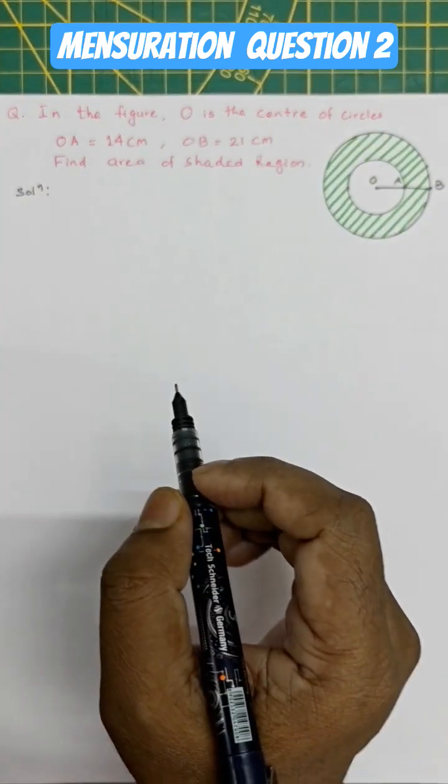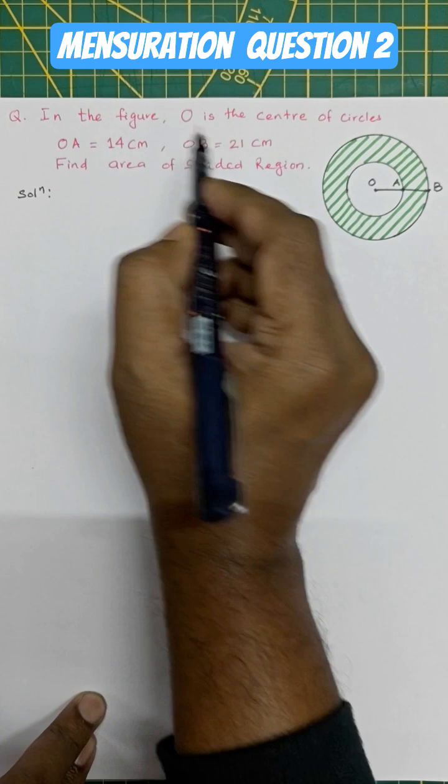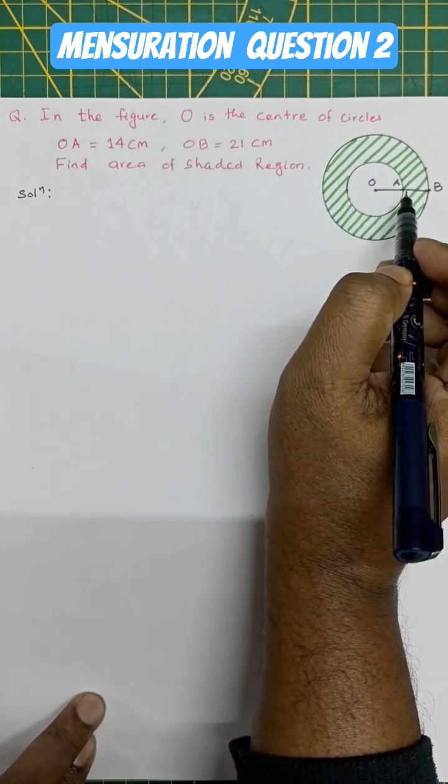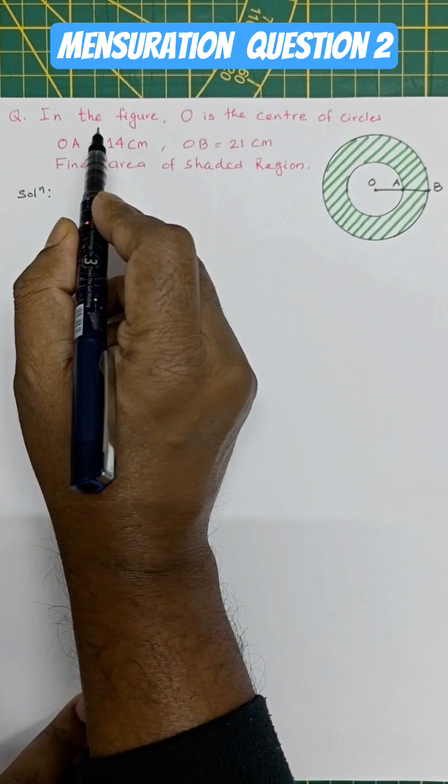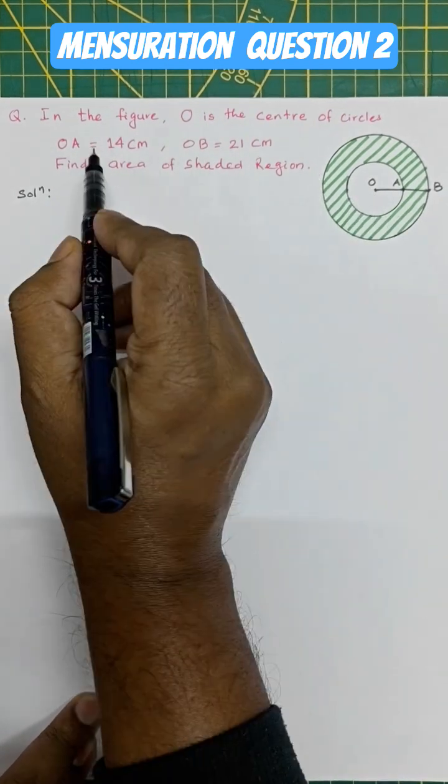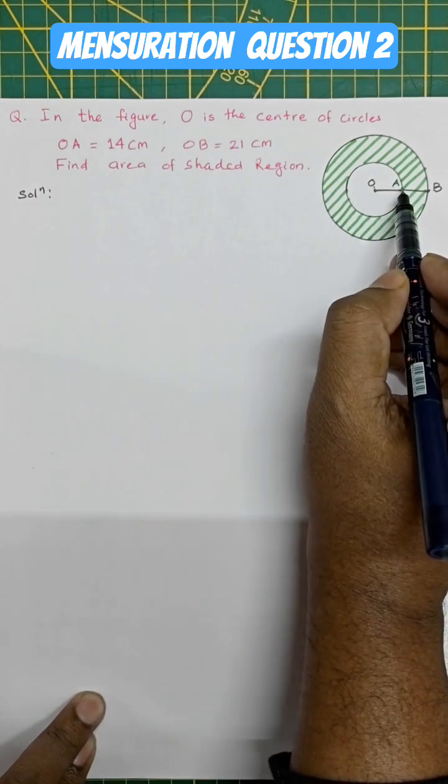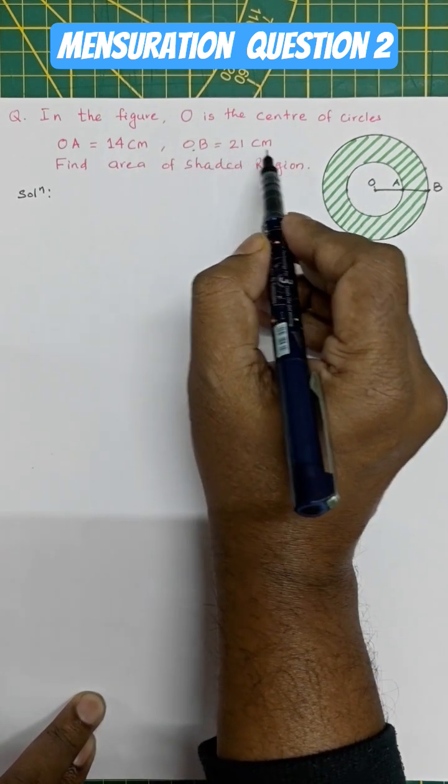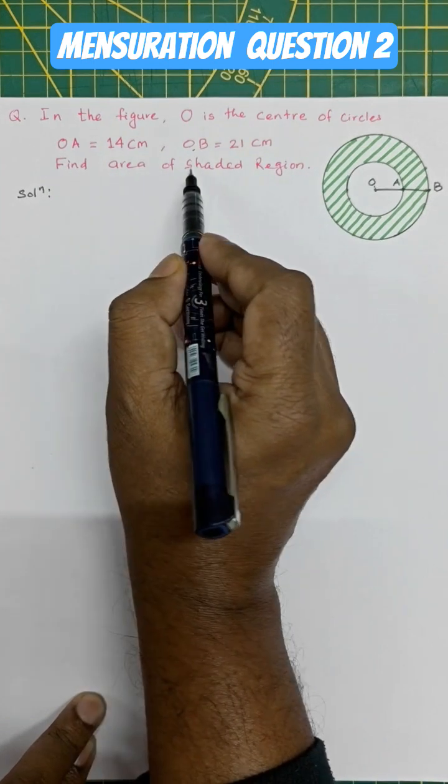Hello everyone, let's solve one area problem. In this question, the figure is given with two circles with shaded lines. O is the center and the distance OA is 14 centimeters, OB is 21 centimeters. Find the area of shaded region.